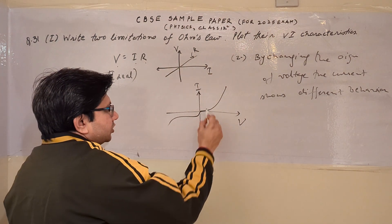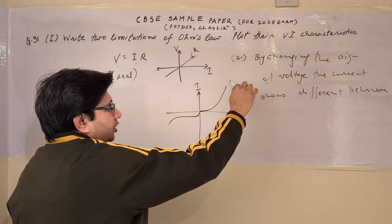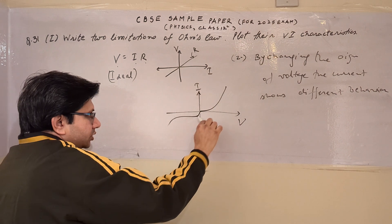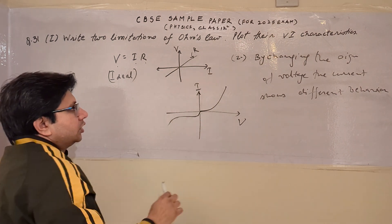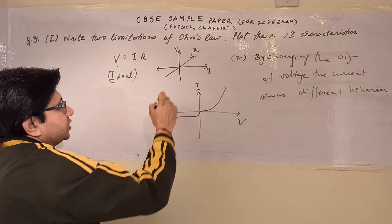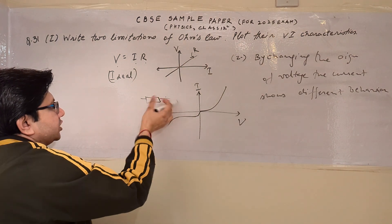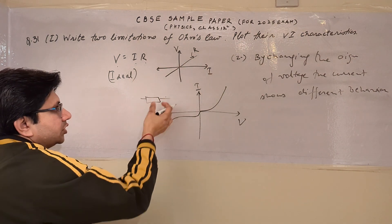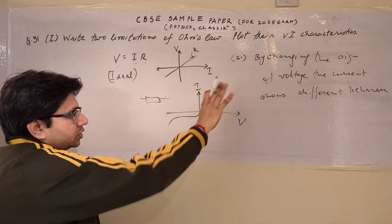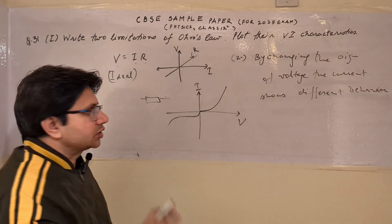You can see easily that when the voltage is in the forward direction, this is the particular graph, but in the negative direction of voltage this is the graph. So the relationship is not the same as in the case of a resistor — if we have a resistor and change the polarity of the terminals, there is no effect. So this is the second reason, and we have shown only two reasons here.